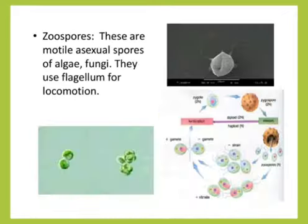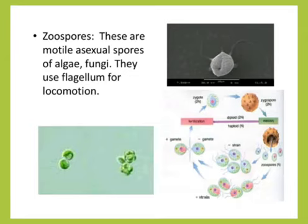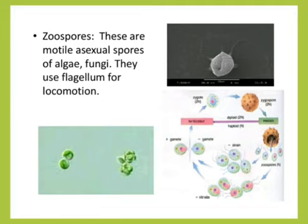The second one is by zoospore. These are motile asexual spores. Why motile? Because they have flagella. They are asexual spores found in algae and fungi, and they can move from one place to another with the help of flagella. Therefore, they are motile.